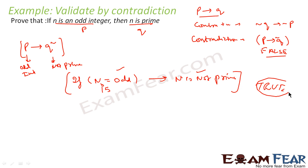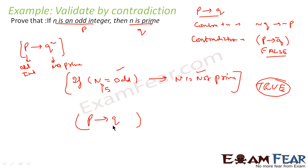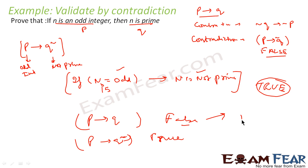Since we proved that the negated statement is true in at least one case, the original statement p implies q is false. By contradiction, if we can show the negated assumption holds even in one scenario, that is enough to establish that the given statement is false.